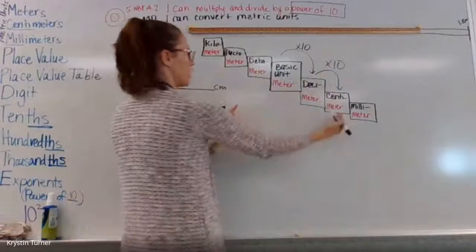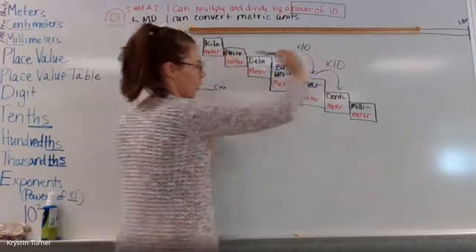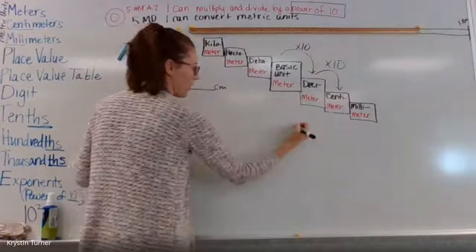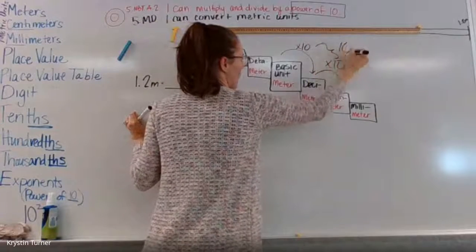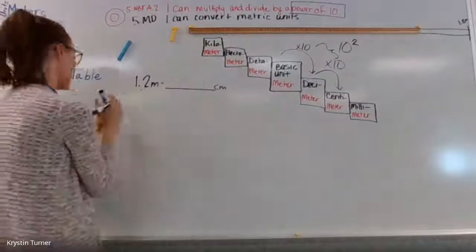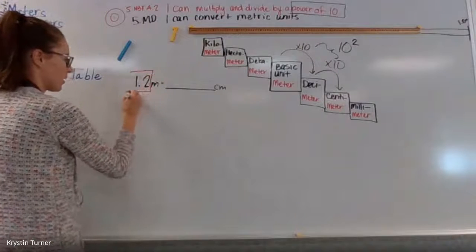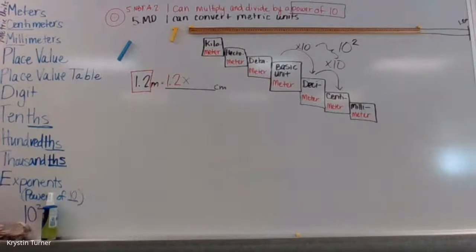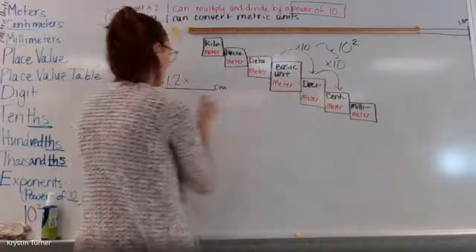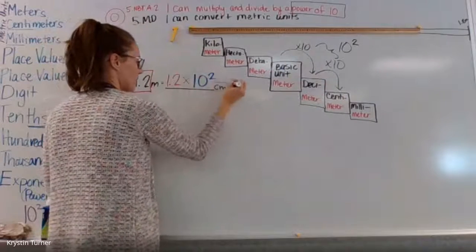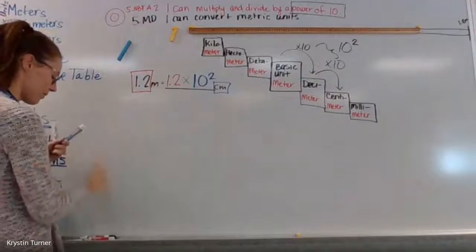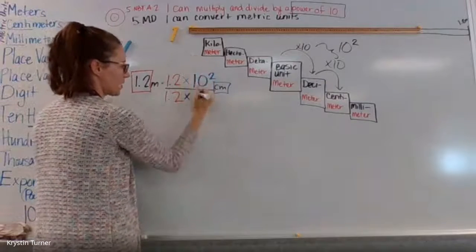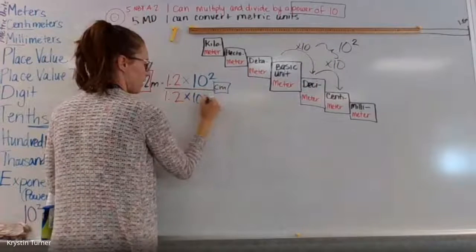But if I'm going from a meter to a centimeter, that would be 10 times 10, which is why we get 100 of them. So the way I think about this is I'm going one, two jumps — or 10 times 10. And I know that 10 times 10 is the same thing as 10 to the power of 2. I have two tens multiplied together. So I'm going to take 1.2 and multiply it by 10 squared, because I have two jumps this way, and that's how many centimeters it's going to be.